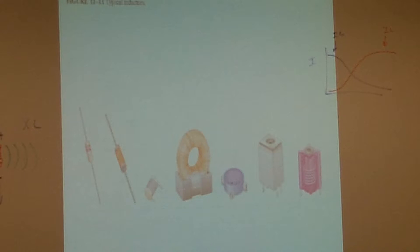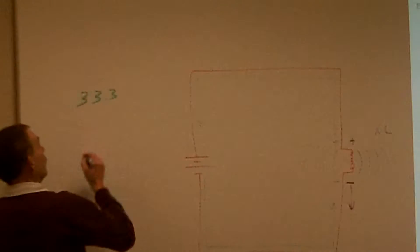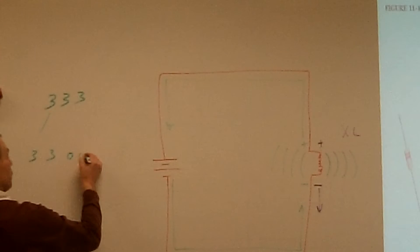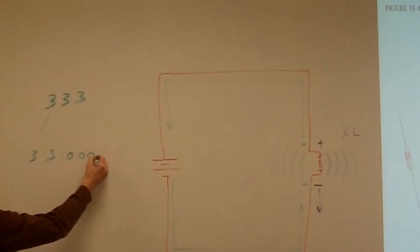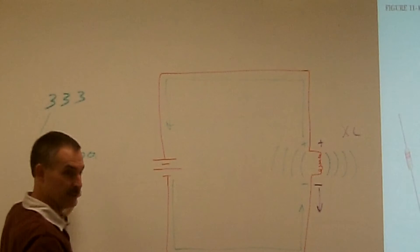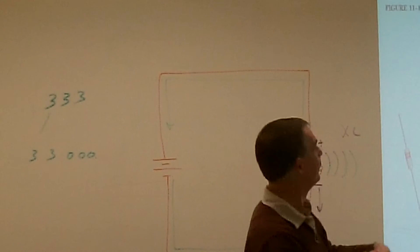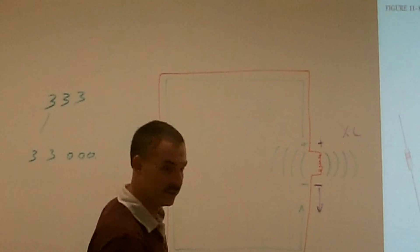Are there color codes on these inductors? Yes, there are. These ones have a color code. On the blue ones they'll have something like '333' - the first two digits are a three and a three, and three more zeros after that, so that's a 33 milli-Henry one. I wouldn't make you memorize it; just keep them in the bag. If you do need to find a particular value, go on the internet and take a look. It's not as straightforward as resistors.